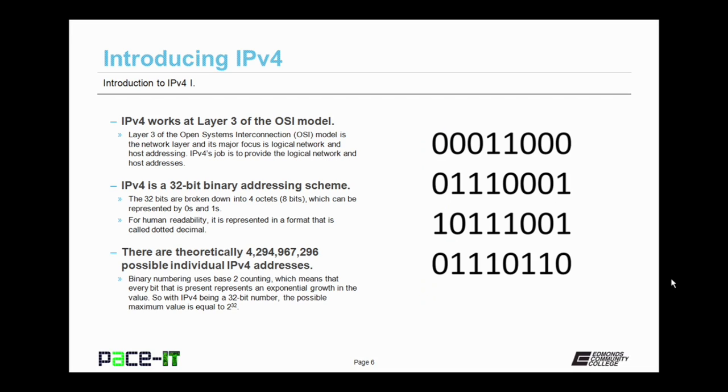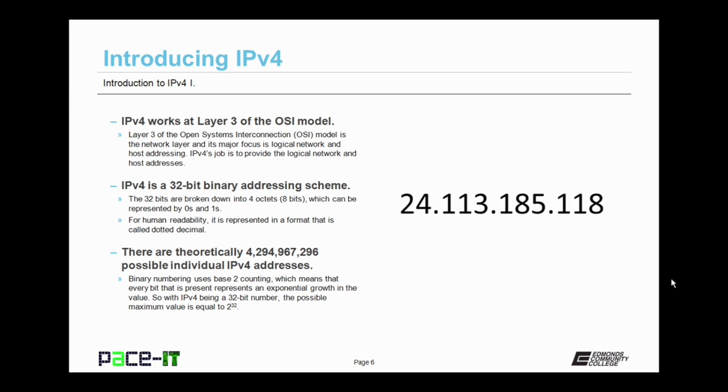IPv4 is a 32-bit binary addressing scheme. The 32 bits are broken down into four octets, which can be represented by zeros and ones. For human readability, it is represented in a format that is called dotted decimal.